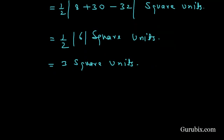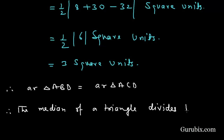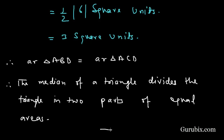Therefore, the area of triangle ABD equals the area of triangle ACD — both are 3 square units. This verifies that the median AD of triangle ABC divides it into two triangles of equal area. This completes the solution. Thank you.